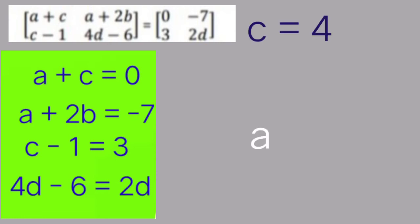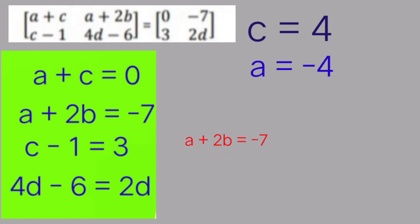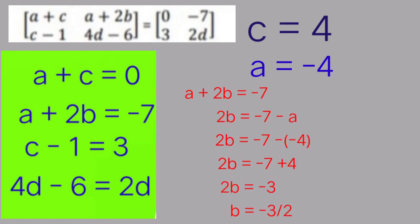Now we shall take the equation in which C is involved. A plus C is equal to 0, A is equal to minus C, it means A is equal to minus 4. Now we shall put it in the other equation: A plus 2B is equal to minus 7, so 2B is equal to minus 7 minus A. Putting the value of A as minus 4, it will become plus 4. 2B is equal to minus 3, and B is equal to minus 3 by 2.